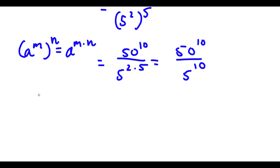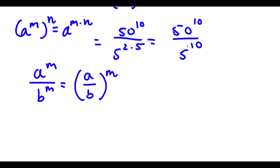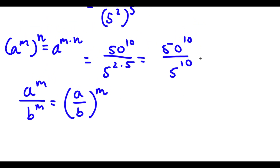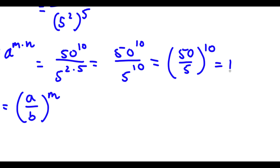Now if I have something in the form a to the power of m over b to the power of m, this is equal to a over b to the power of m. So in this case, 50 to the power of 10 over 5 to the power of 10 is going to equal 50 over 5 to the power of 10. Now 50 over 5 is the same thing as 10. So now I have 10 to the power of 10.